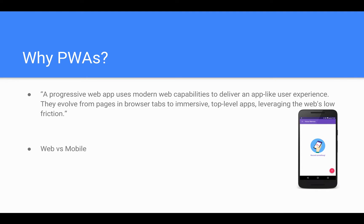But first of all, what are Progressive Web Apps? The official definition states that a Progressive Web App uses modern web capabilities to deliver an app-like user experience. They evolved from pages and browser tabs to immersive top-level apps, leveraging the web's low friction.